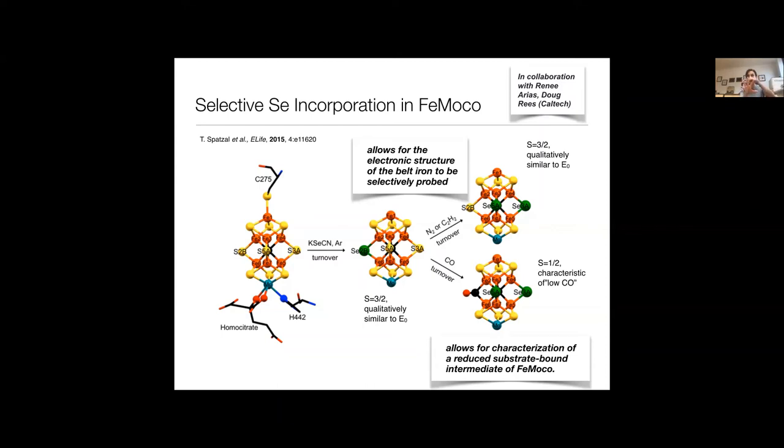The other thing that's kind of cool about this then is it allows us to use the selenium as a probe, sort of to crawl around this cofactor and to say, what does the cofactor look like from the perspective of selenium 2B when the selenium interacts with iron 2 and 6 versus what does the cofactor look like from the perspective of selenium 3A and 5A? And then we can also inhibit this cofactor with CO. This generates a different EPR signal, an S equals 1/2 that is characteristic of what's known in the literature as low-CO FeMoCo. You don't need to worry about that. But what's cool is that the selenium stays in the 3A and 5A positions. So when we compare the cofactor above and below, this allows us to actually see how the electronic structure is perturbed upon CO binding. And because CO only binds to more reduced states, it effectively allows us to characterize a reduced substrate bound intermediate of FeMoCo.